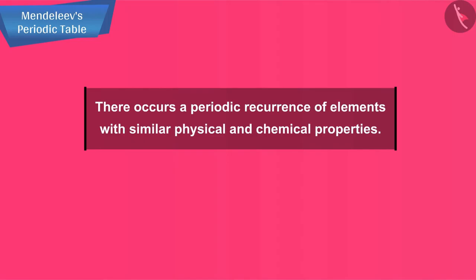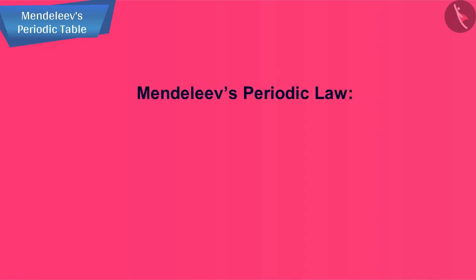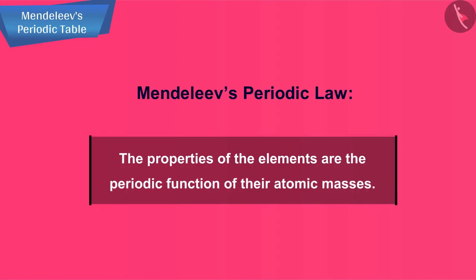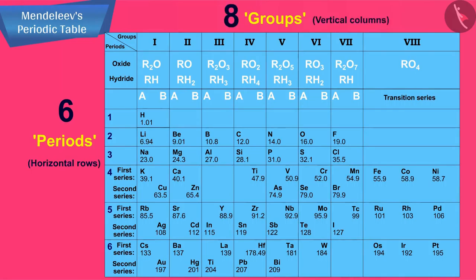Therefore he stated his periodic law. According to Mendeleev's periodic law, the properties of the elements are the periodic function of their atomic masses. Mendeleev's periodic table contains vertical columns called groups and horizontal rows called periods. There were six periods and eight groups in the original periodic table of Mendeleev.